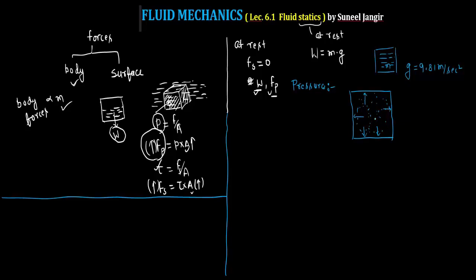If P is the pressure in a container, pressure is defined as force intensity, or simply force per unit area. This force is always a normal force — it always acts normal to the surface. Pressure is a surface force intensity, so as area increases the pressure force (normal force) also increases. Pressure is a normal force intensity due to the molecular momentum of the molecules.